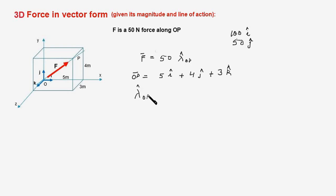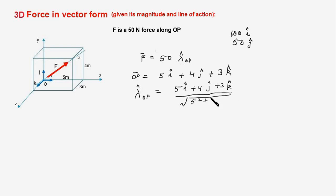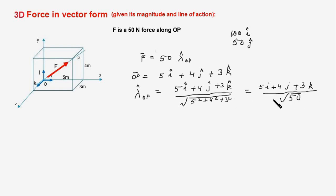From this position vector we can find the unit vector lambda_OP. Lambda_OP is this vector divided by its magnitude: (5i + 4j + 3k) divided by the square root of (5² + 4² + 3²), which works out to (5i + 4j + 3k) divided by the square root of 50.